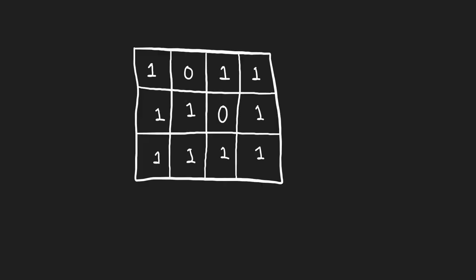It's pretty easy when you're looking at a picture — you can tell that this is the biggest square we can make. But how do you do this with an algorithm? In this case, we have a four-by-three grid. What's one brute force way we could do this?